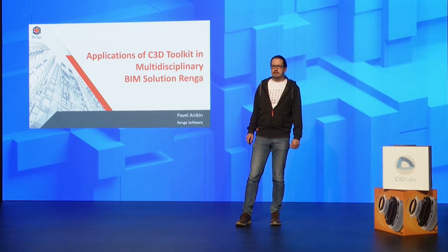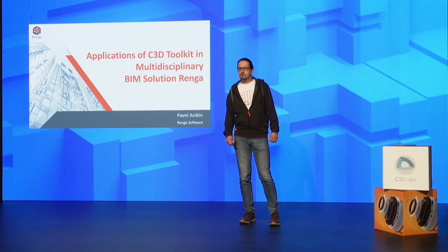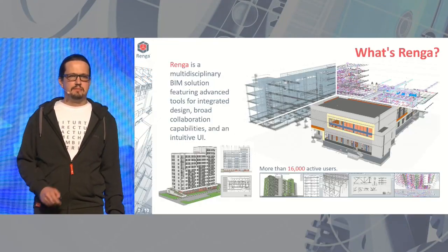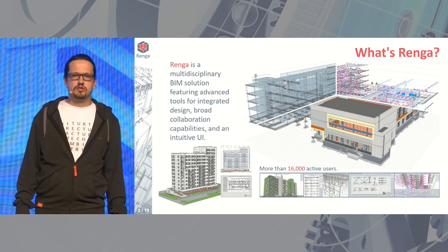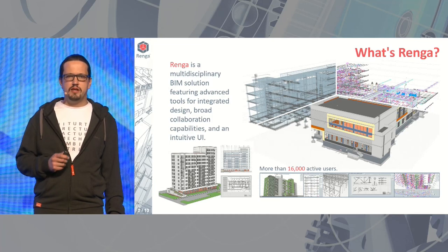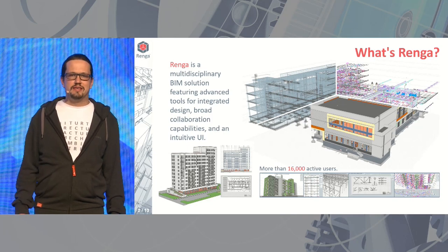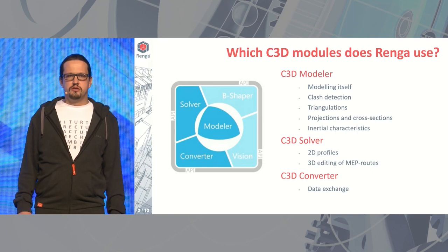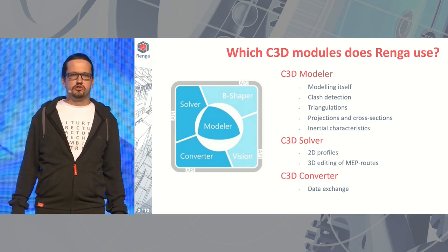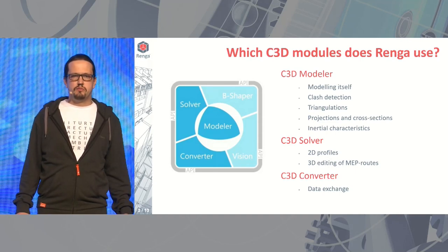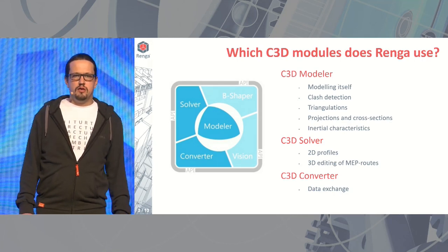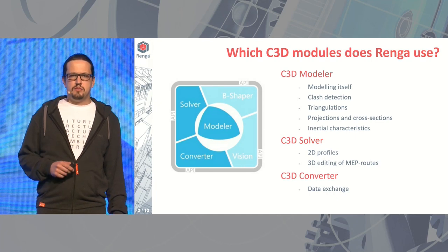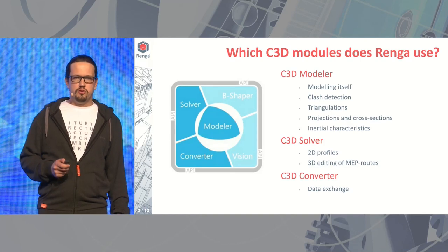Hello. My name is Pavel Anikin, I'm Lead Software Engineer at Rengar Software. Today I'm going to talk about how we apply C3D Toolkit in our product called Rengar. Rengar is a multidisciplinary BIM (built-in information modeling) solution featuring advanced tools for integrated design, broad collaboration capabilities, and an intuitive user interface. We have more than 16,000 active users, not only in Russia but worldwide. Under the hood, Rengar relies on C3D Toolkit — we use three of its modules: Modeler, Solver, and Converter. We have also experimented with B-Shaper with promising results. Though we don't use the Vision module — instead using our own DirectX-based rendering engine — this may change in the future.